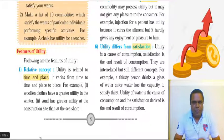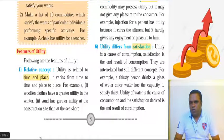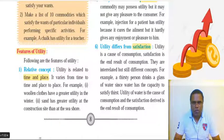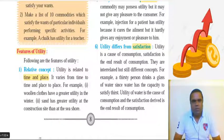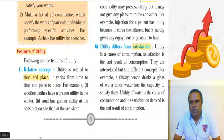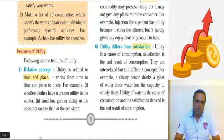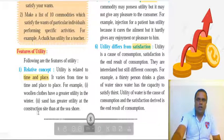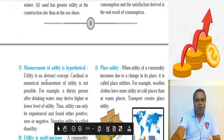To remember all the features, here is a trick: remember the first three points — utility is a relative concept, it is a subjective concept, and it is morally colorless. Then remember the three 'difference' points — utility is different from usefulness, utility is different from pleasure, and utility is different from satisfaction. For each of these, use a different example to answer in your exam.